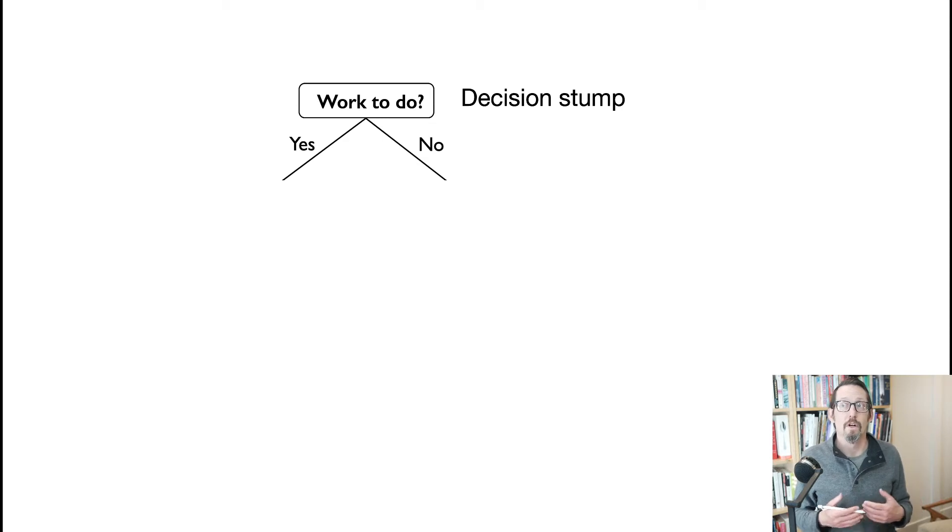So we start with what's called the root node, or a stump is equivalent, right? Let's say we're trying to decide what to do with our day. That's our task.